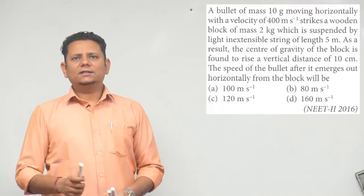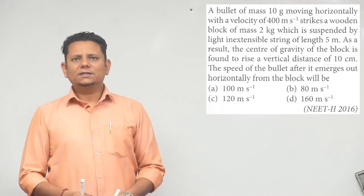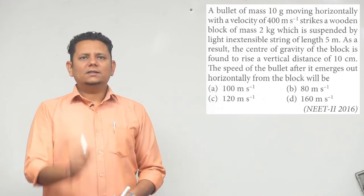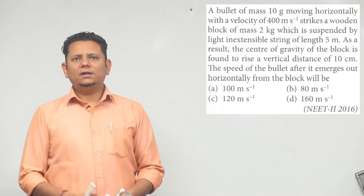5 meters. As a result, the center of gravity of the block is found to rise a vertical distance of 10 centimeters. We need to find the speed of the bullet after it emerges out horizontally from the block.